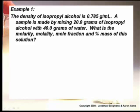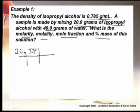In this example, we have isopropyl alcohol. We know its density, and we've got grams. What is the molarity, the molality, the mole fraction, and the percent mass? To do this, I like to convert things to moles first. We've got isopropyl alcohol - we need its molar mass. The formula is C3H7OH.